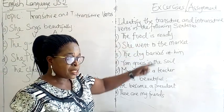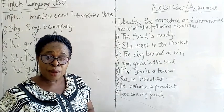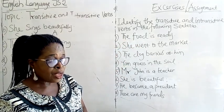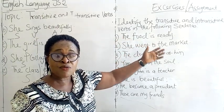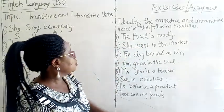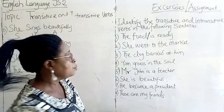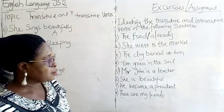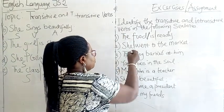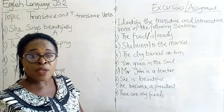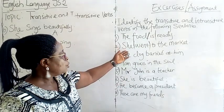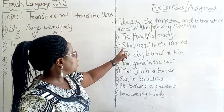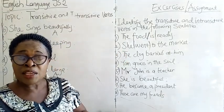Number one: The food is ready. What type of verb is this? You will find out that we have the subject but we do not have the object. So, the sentence is in the intransitive form. We just have the subject, the verb, and the adjunct. Number two: She went to the market. We have the subject, we have the verb, and we have the object. So, this number two sentence is in the transitive form.